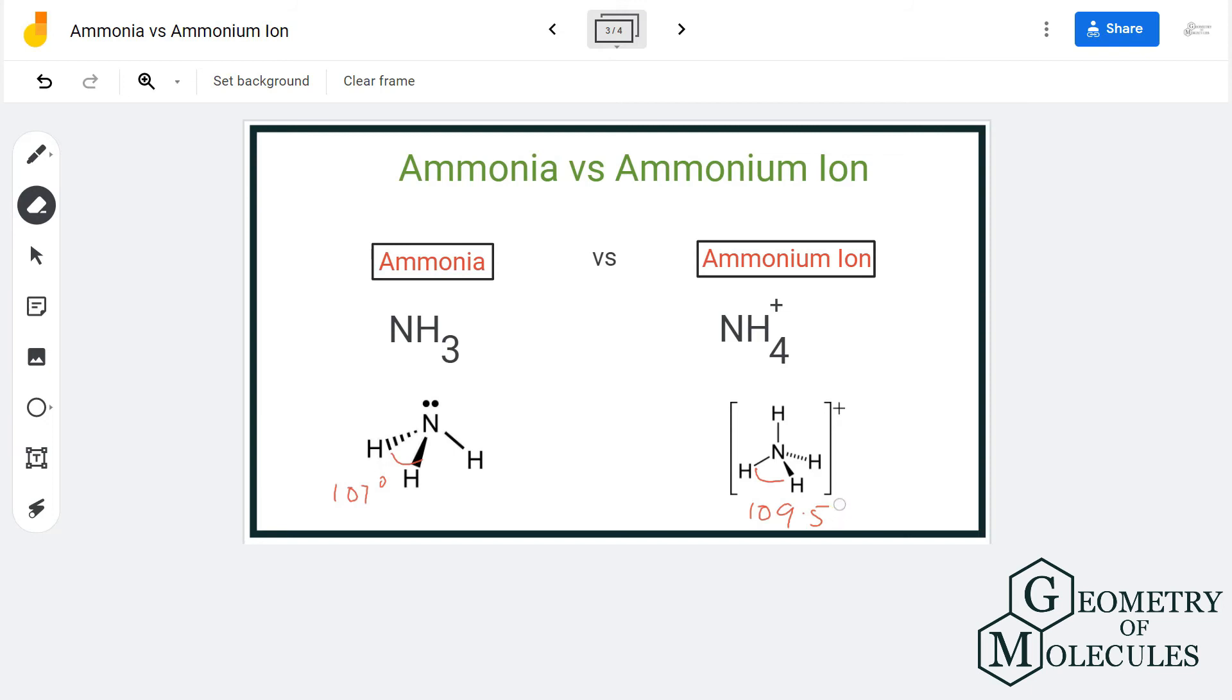the lone pair of electrons that is present on the nitrogen atom in NH3. For NH4+, there are no lone pairs, so it will have a bond angle of 109.5 degrees, which is the exact angle that a molecule with tetrahedral shape should have. So these are the differences